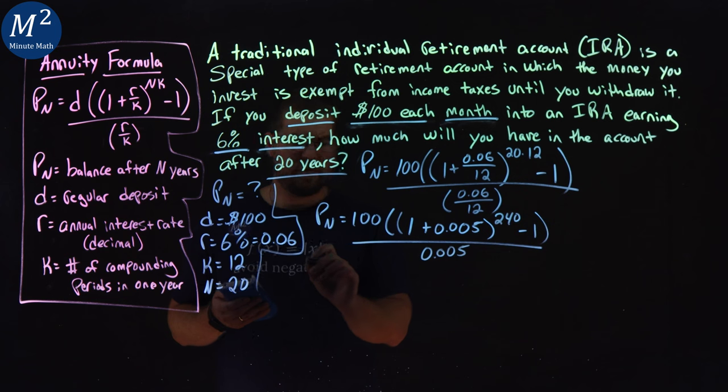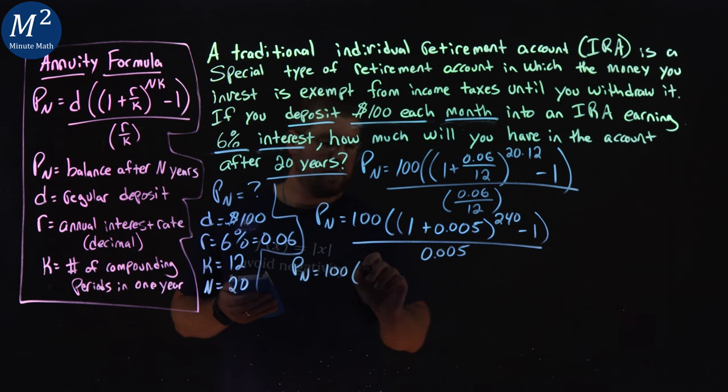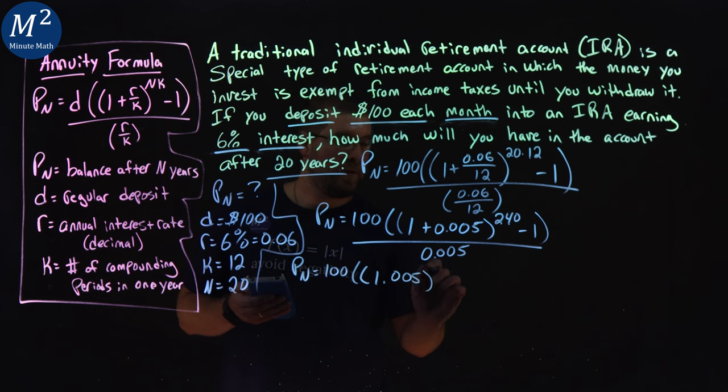Now we got to go, let's simplify this again. We have P sub n is 100 times two parentheses here, but then 1 plus 0.005 is 1.005 to the power of 240. We minus 1 to that, all over 0.005.